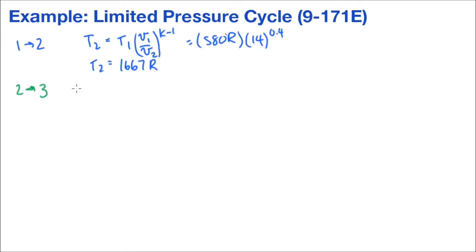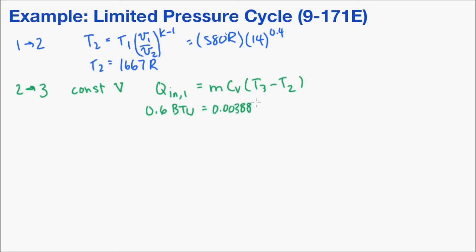From 2 to 3, this is constant volume heat addition. So Q_in1 is equal to m*Cv multiplied by T3 minus T2. So let's plug in the numbers we have. We know Q is 0.6 BTU, we solved for the mass, we can look up the Cv for air, 0.171 BTU per pound mass per Rankine. We don't know T3, but we know T2. So we can solve for T3, and we get that that is equal to 2571 Rankine.